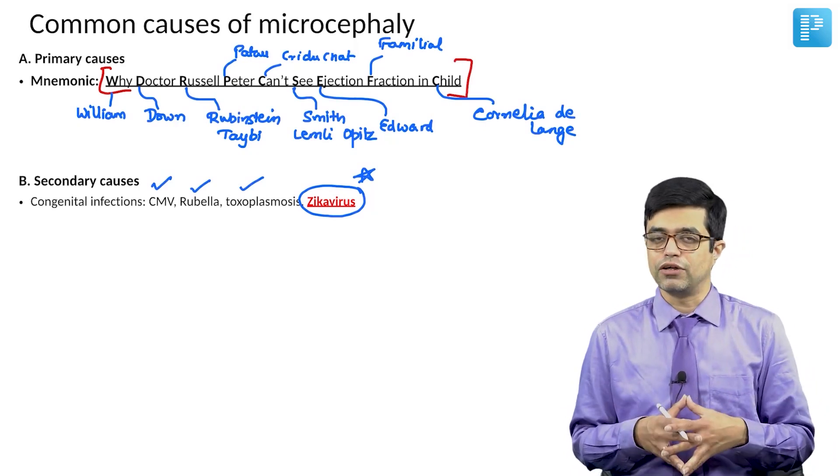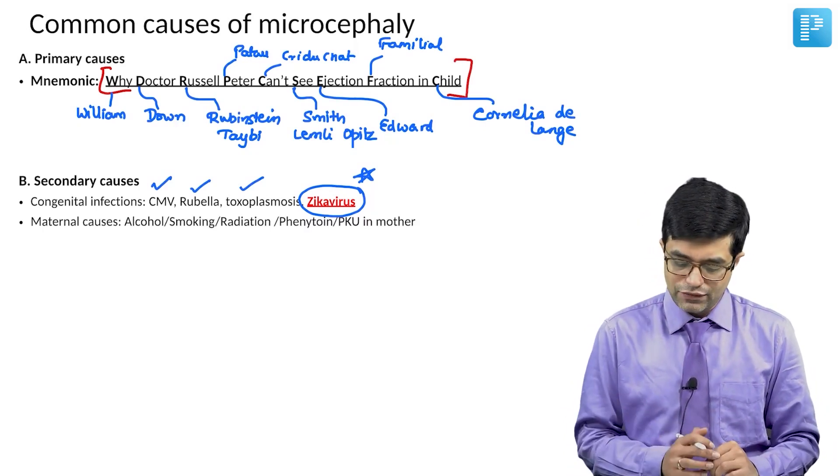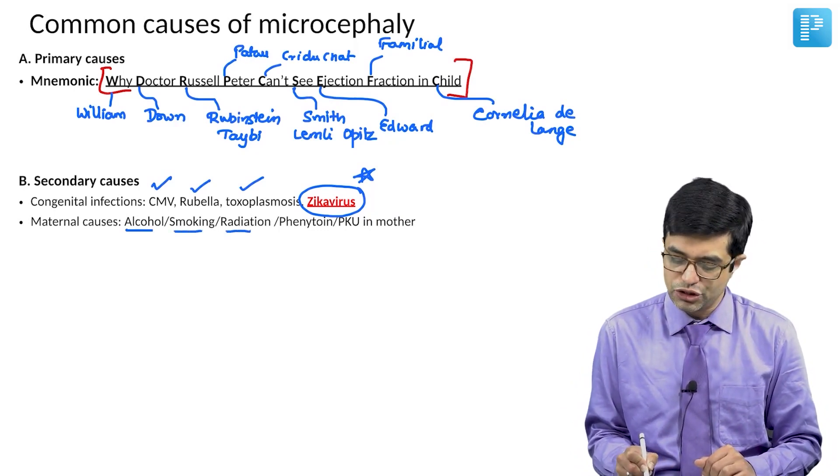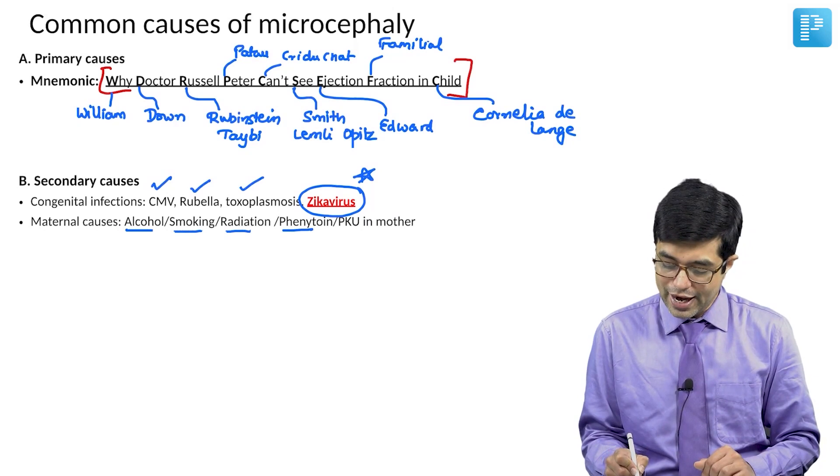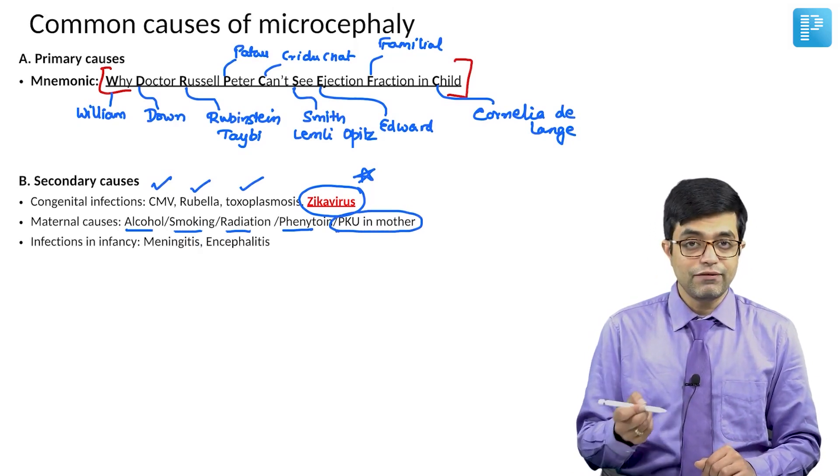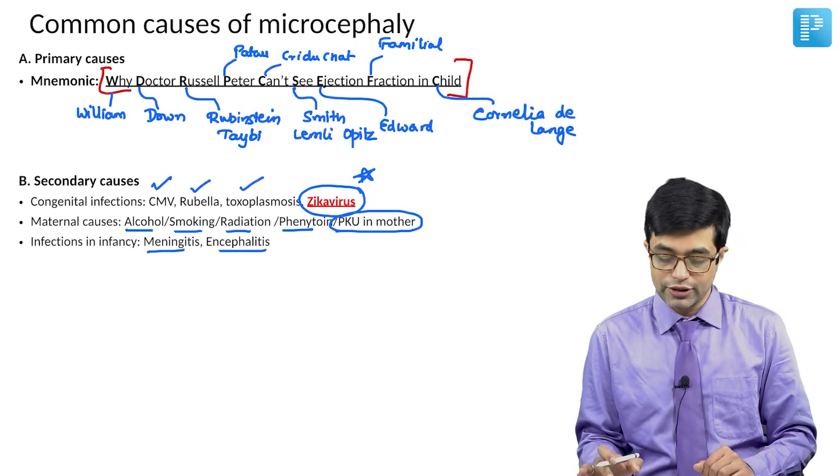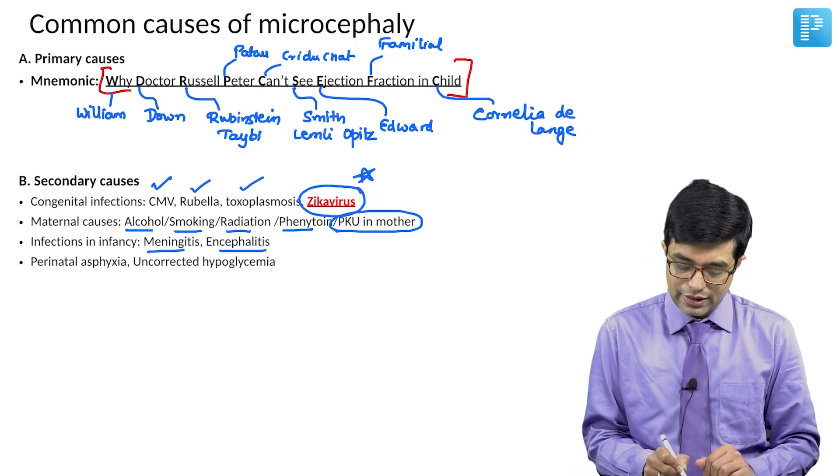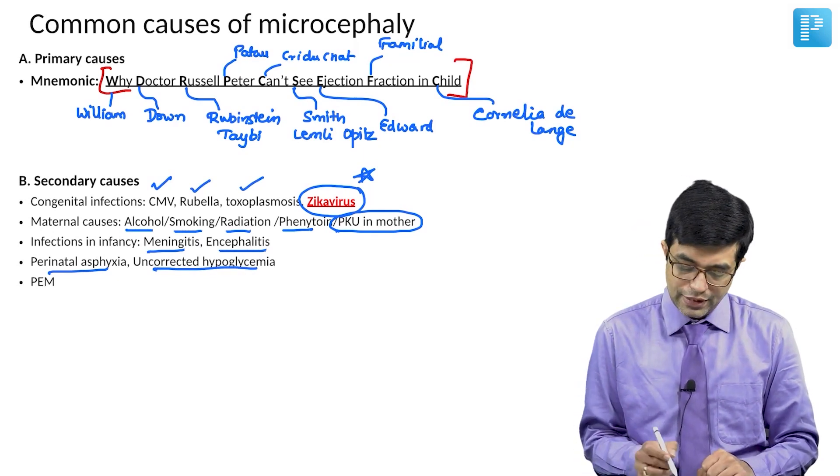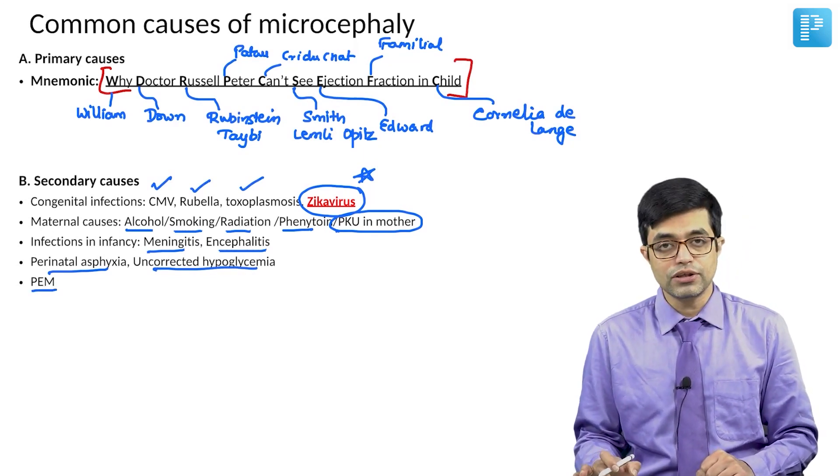Next, we have maternal causes like maternal alcohol, maternal smoking, maternal radiation, maternal phenytoin, and maternal phenylketonuria. Then infections in infancy, meningitis and encephalitis can cause microcephaly. Perinatal asphyxia and uncorrected hypoglycemia can cause microcephaly. Protein energy malnutrition can cause microcephaly.